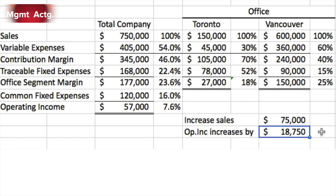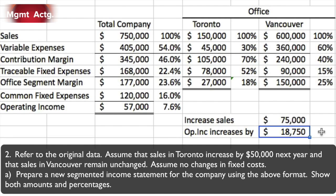Let's look at number two. Refer to the original data — it's still on the screen. Assume that sales in Toronto increased by $50,000 next year and that sales in Vancouver remain unchanged. Assume no changes in fixed costs. That wording is important — number one said 'no changes in cost behavior patterns,' but this now says 'no change in fixed costs,' which means no change in traceable or common fixed costs. There's no such thing as a variable fixed cost — no change in fixed costs, period, whatever they're called.